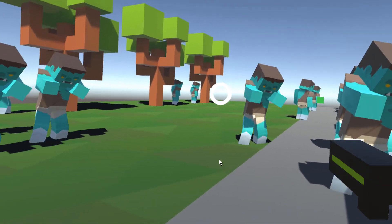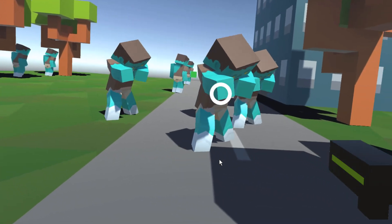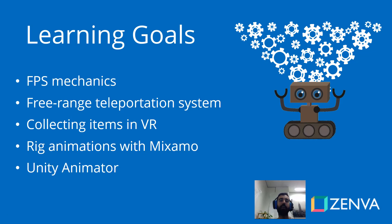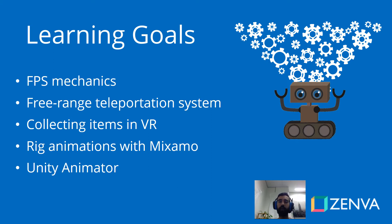Now let's take a look at the learning goals of this course. You'll be creating this first-person shooter game from scratch, so we're going to cover all the game mechanics that you saw: shooting bullets, killing bad guys, collecting ammunition.